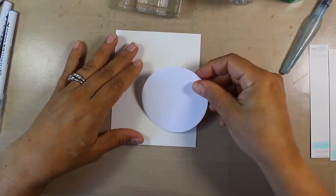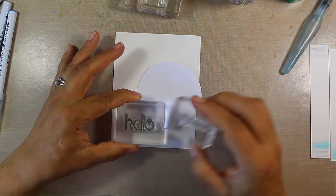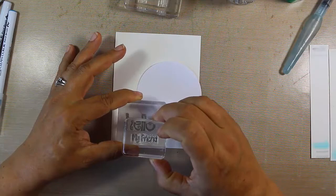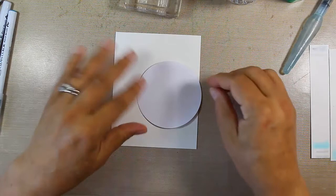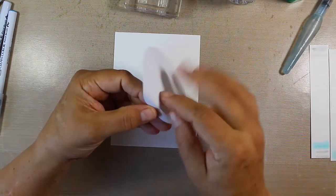First I want to mask off a circle. I'm going to use this sentiment right here from the Whimsical Friends stamp set, but I'm going to use this one from the Birthday Butterfly set, and that's going to go below it. I'm also going to offset my circle.